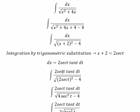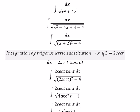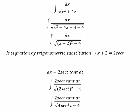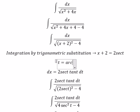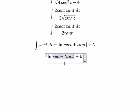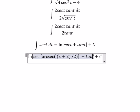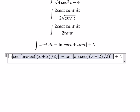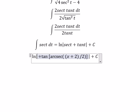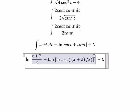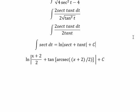For t we need to change back for x, so we divide both sides with number two. We know that secant... so that should be about (x+2)/2. And this is the final answer. That's the end, thank you for watching.